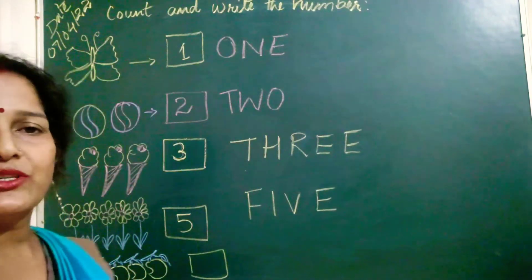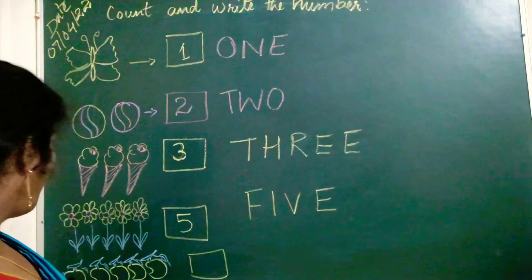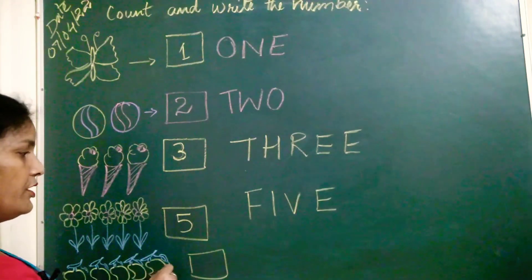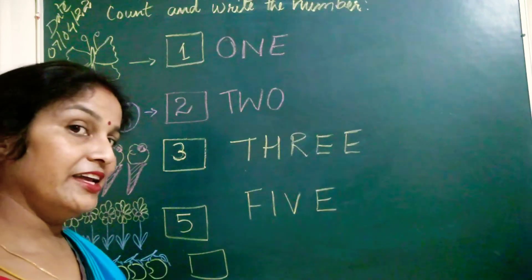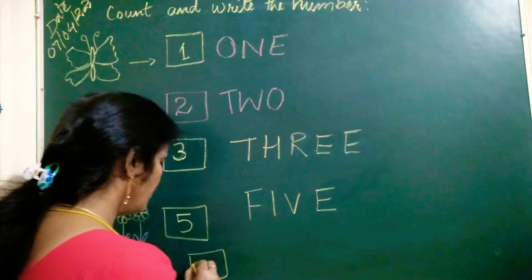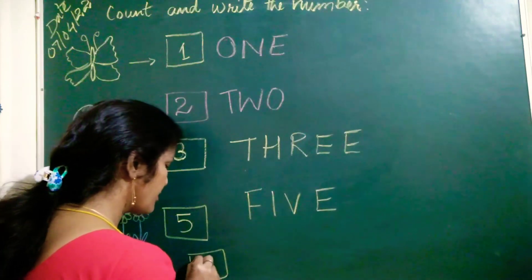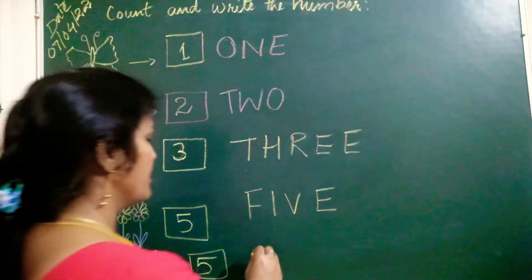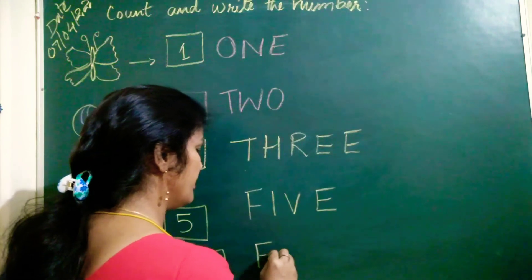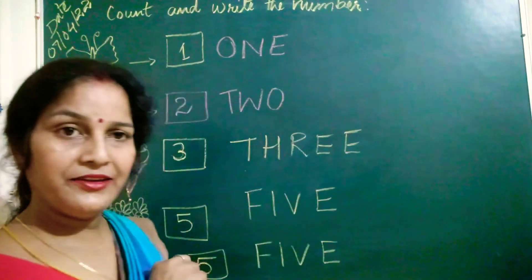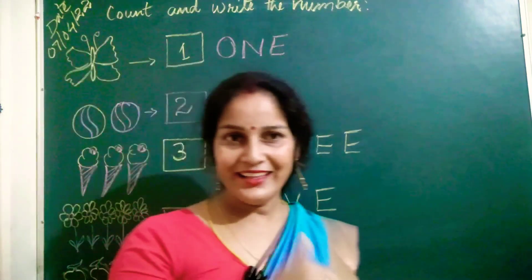Now how many mangoes are here? One. Two. Three. Four. Five. Again five. So five. Five. And I. V. E. Five. So write it.